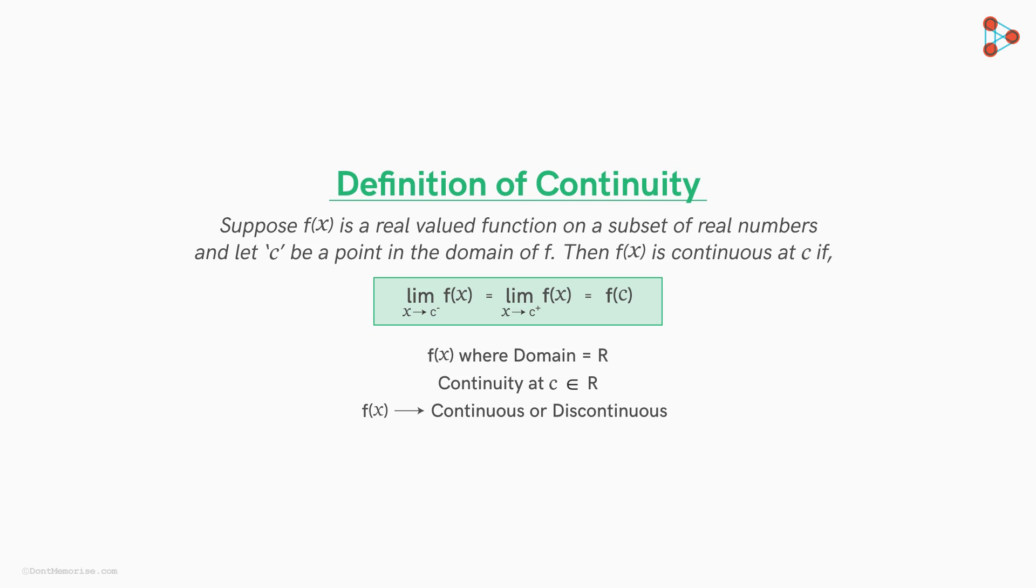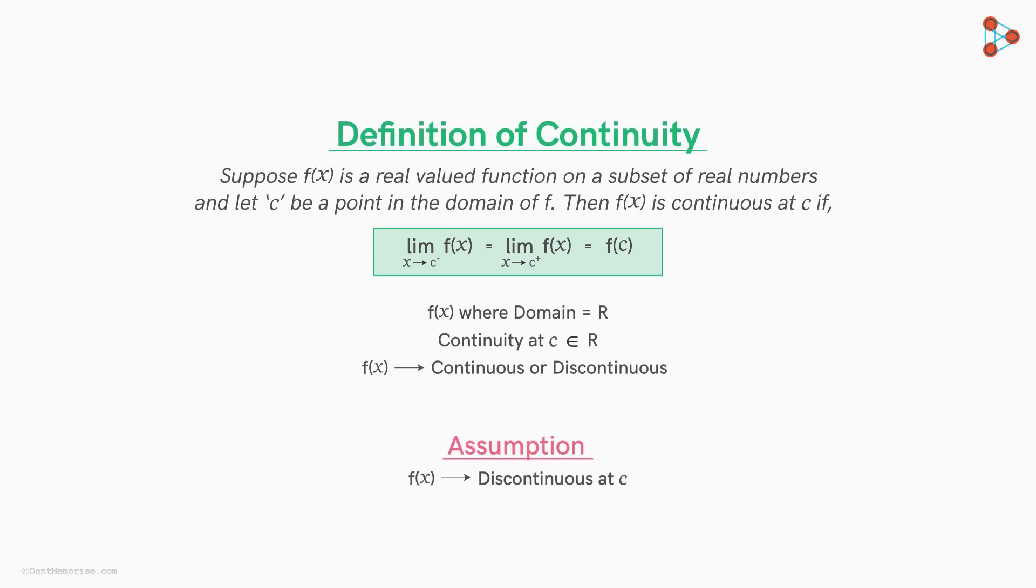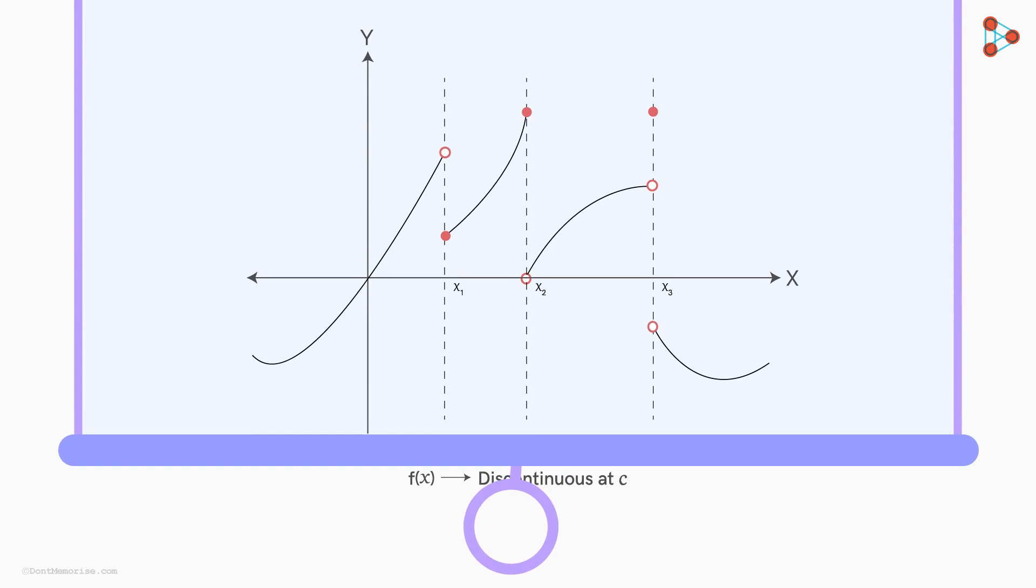Here's a question for you then. If suppose f is discontinuous at c, then what will happen to the graph of the function at that particular c? This is a graph of a discontinuous function that we'd seen in the last video. We observe discontinuity at three points, x1, x2 and x3. The point x1 comma f of x1 on the graph is not connected with the part of the graph on its left. This point is not connected with the part of the graph on its right. While this point is disjoint from both the left as well as the right partitions.